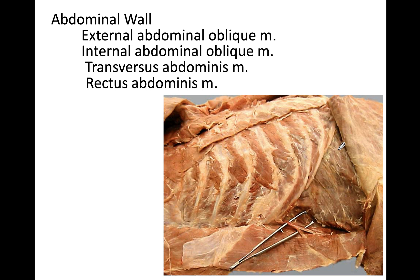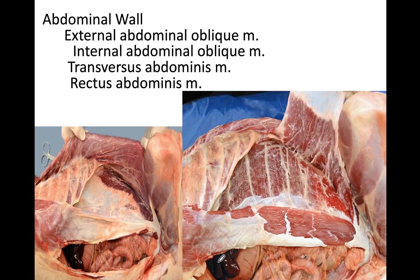Here we can see the muscle whose fibers run dorsoventrally — this is the transverse abdominal muscle. We can also see a muscle that runs in a straight line from the last sternum toward the pubic bone — this is the rectus abdominal muscle, found in the ventral portion of the abdominal wall. The muscle whose fibers run cranioventrally is the internal abdominal oblique muscle.